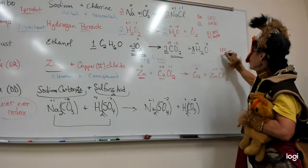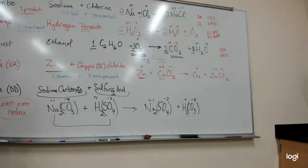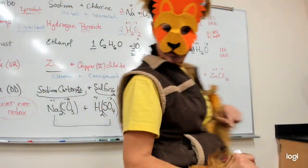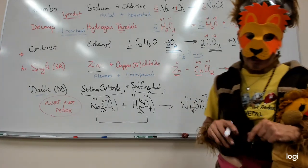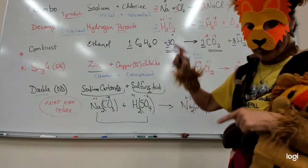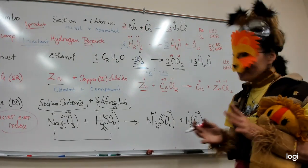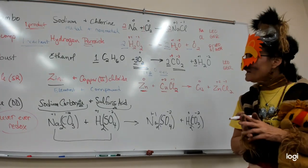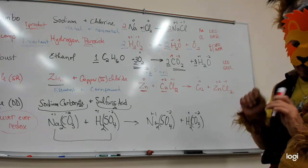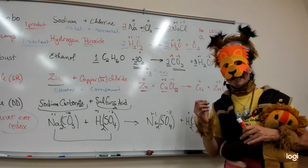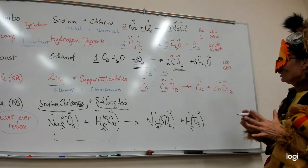Combustions are definitely Leo GERs. Combustions and singles are always Leo GERs. Always. Doubles are never. I put a little star. Combos and decomps, usually. If you see the halo, you're going for it. They're not always. In this class, we'll probably see them always. The other thing I want to mention, not every reaction falls into these five. These are five that you, as beginning chemistry students, can easily write and say, wow, look at me.